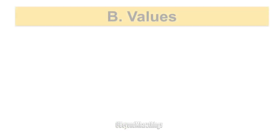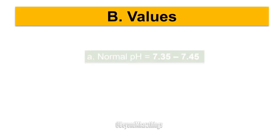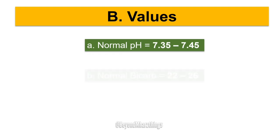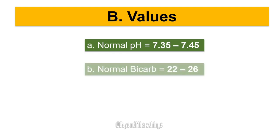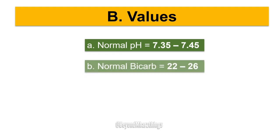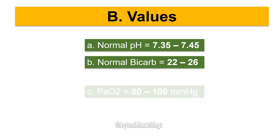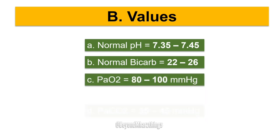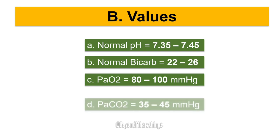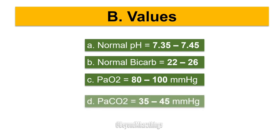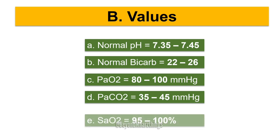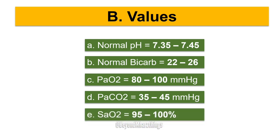Normal values: Normal pH equals 7.35 to 7.45. Normal bicarb equals 22 to 26. Partial pressure of oxygen equals 80 to 100 mmHg. Partial pressure of carbon dioxide equals 35 to 45 mmHg. Oxygen saturation equals 95 to 100 percent.